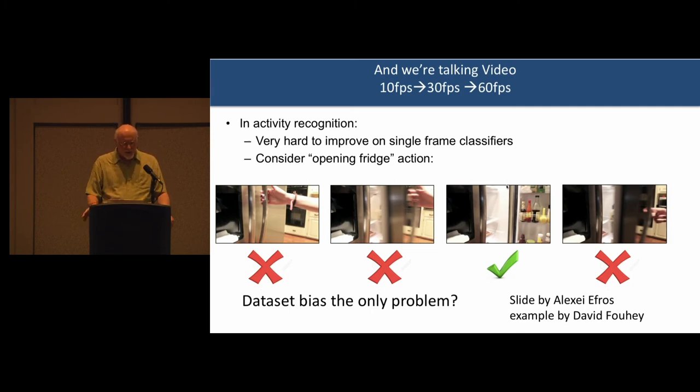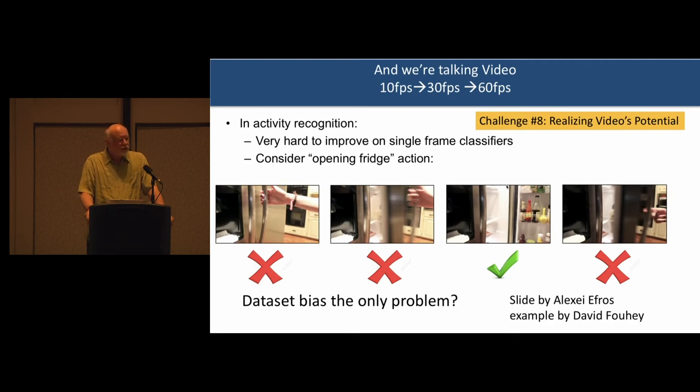What he's showing here from left to right is the activity of opening a refrigerator, and if you do video analytics on that, nobody, as I understand it from him, is doing better than just that single still image where you see the refrigerator actually open. So that's something that we obviously, there's a lot of potential to improve. Treating video as a first-class citizen. So I would add realizing video's potential is our eighth challenge that we would really like to address here. And that's treating it as a first-class citizen, using it to improve our accuracy, improving to make the results more robust.